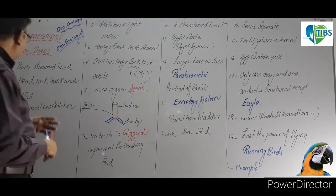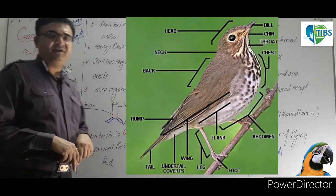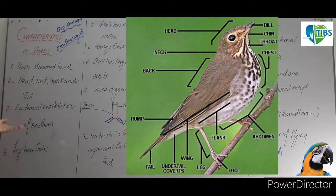Body is divided into four parts: head, neck, trunk and tail. You can see in the diagram. Head, neck, trunk and tail. These are four pieces of body.